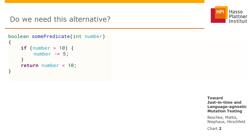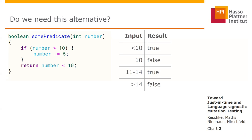Consider yourself reviewing a code base. You encounter a function like this predicate here — you can see it's called some function. Here's what this predicate returns for which input, and you ask yourself: is this if statement, the alternative in this code statement, still required? If it is not required, you might as well delete it, because it just produces dead code.